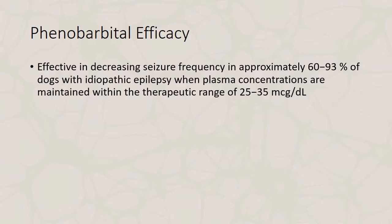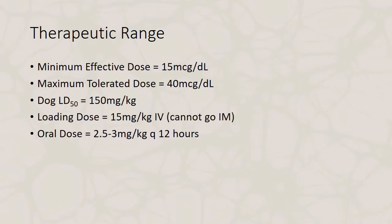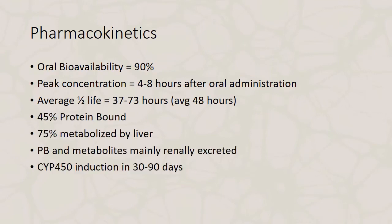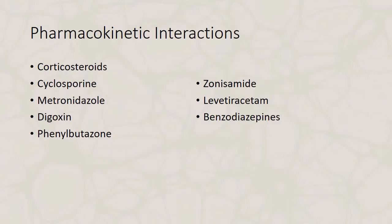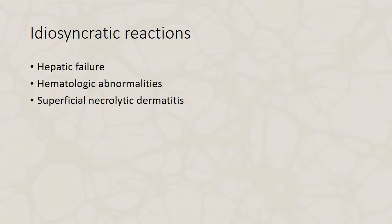About 75% of patients respond to phenobarbital at a therapeutic range of 25 to 35 micrograms per deciliter. Phenobarbital is metabolized by the liver, so induction of the cytochrome P450 system will affect this medication along with levothyroxine — which is why some patients on phenobarbital become hypothyroid. There are numerous side effects associated with phenobarbital, which are usually dose-dependent, but there are also certain idiosyncratic reactions.